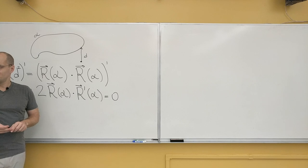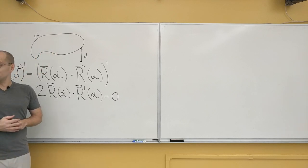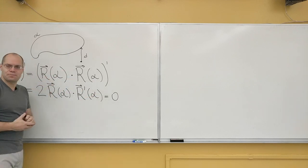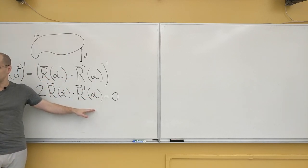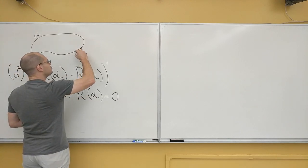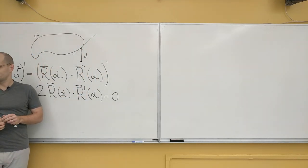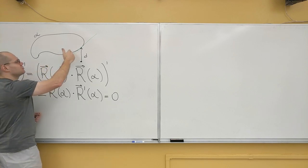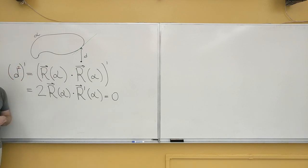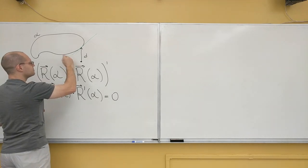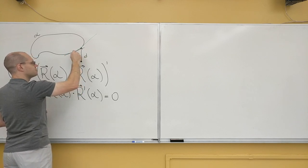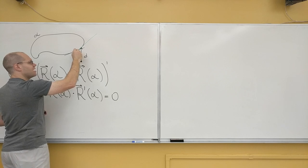That's where the story would have ended if this problem did not come from geometry. But it did, so we owe it to ourselves to interpret this answer geometrically. We know that R'(α) points in the tangential direction. I don't know which way it points because that depends on whether we chose alpha to go counterclockwise or clockwise. What this says is that the position vector is orthogonal to its derivative—in other words, the position vector is orthogonal to the tangent. We have to find the point where the position vector is orthogonal to the tangent.